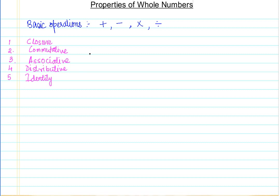What we will do is take a set of whole numbers, then perform addition, subtraction, multiplication, and division, and see whether each property is fulfilled or not. We will do the same for all other properties. Do not worry if you don't know what closure, commutative, or any of these terms mean — I will be covering them in detail as we go through one by one.